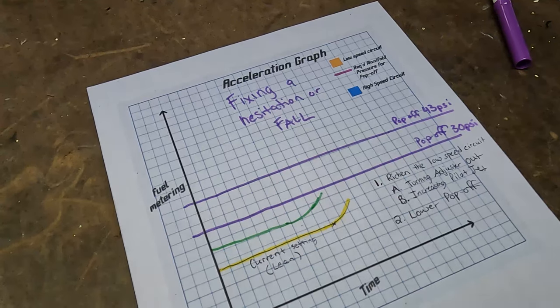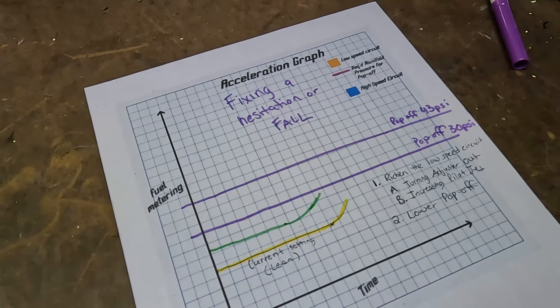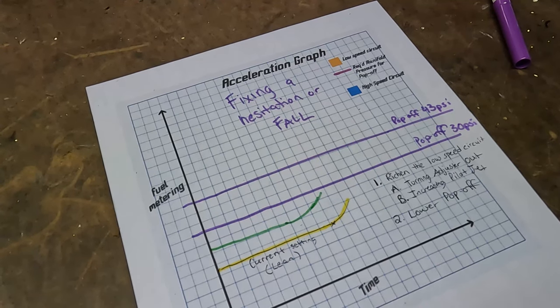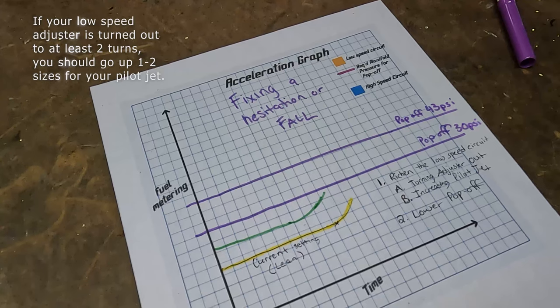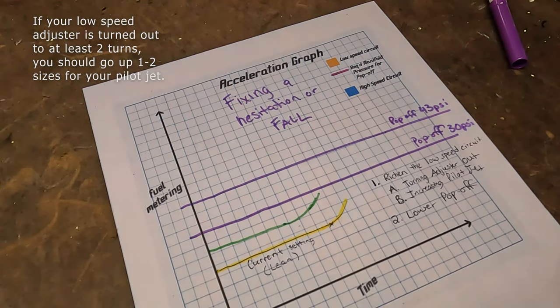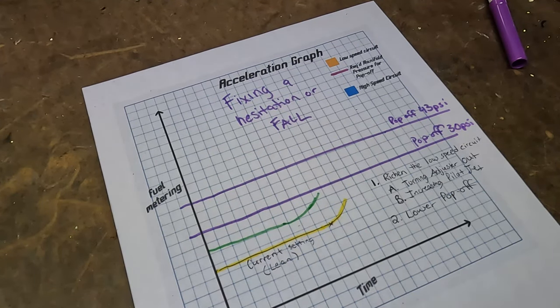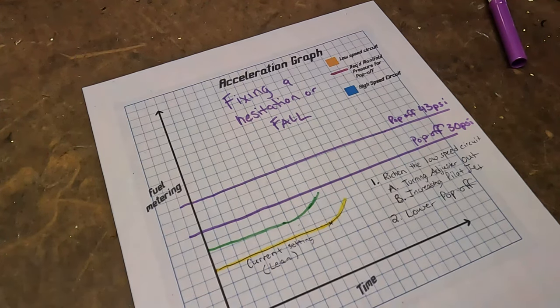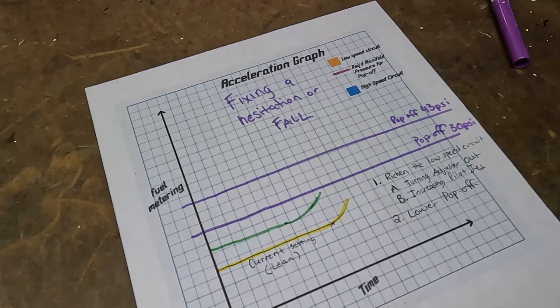The rule of thumb for increasing pilot jet size is this: if you have to turn your low speed adjuster more than two turns out, then you need to go up a size pilot jet. A common example would be going from a 65 or a 67.5 to a 70 or a 75 pilot jet.